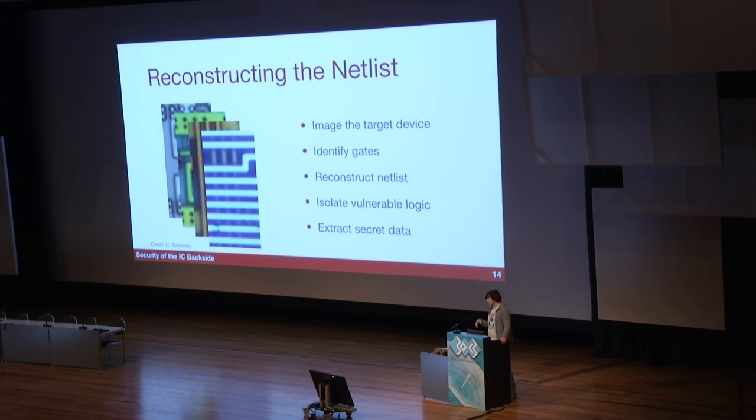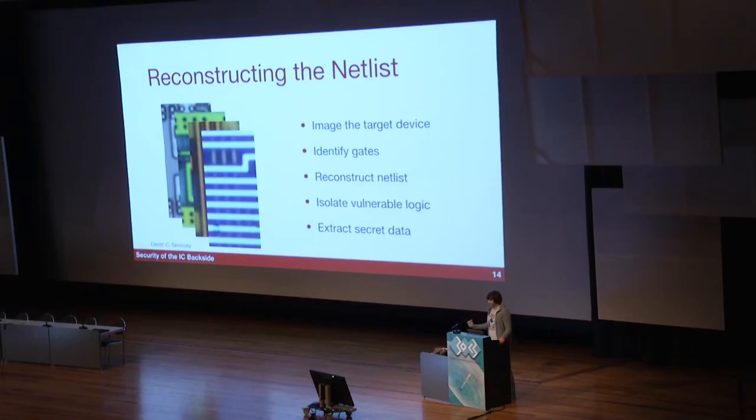Man geht immer der gleichen Methode vor: man schaut sich das Bild an, identifiziert die Gates und versucht die logischen Funktionen wiederherzustellen. Man sieht die Endgates und die Funktionen — und wenn man mit Pen & Paper rumsitzt, kann man sagen: wenn eine 1 hier ist und eine 0 da, was kommt raus? Wir haben das Netlist und können jetzt die Logik isolieren und die geheimen Daten rausnehmen.